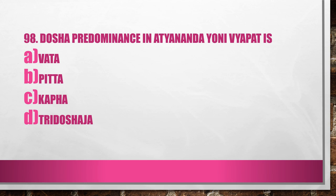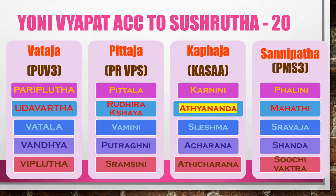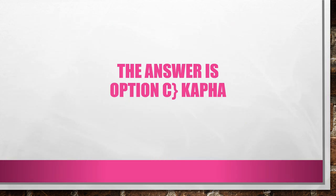Question 98. Doshya predominance in Athyananda Yoni Vyabath is: A. Vada, B. Pitta, C. Kappa, D. Tridoshya. Yoni Vyabath according to Sushruta is 20. Vadaja — code PUV3: Padipluta, Udhavarta, Vadaala, Vandhya, Vippluta. Pitta — PRVPS: Pittaja, Yudhirakshaya, Vamini, Putrajni, Sramsini. Kabaja — KASAA: Karnini, Athyananda, Sleishma, Ajarana, Adhijarana. Sannipada — PMS3: Falini, Mahadi, Sravaja, Shanda, Suji, Vatra. Here the question is Athyananda and it is a Kabaja disease. Answer is Option C, Kabba.